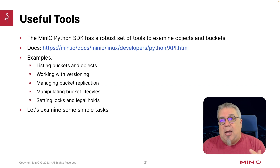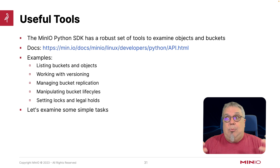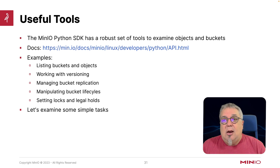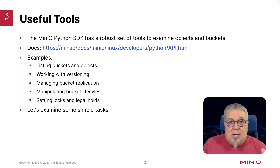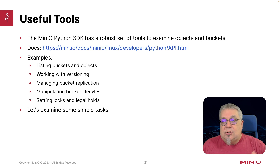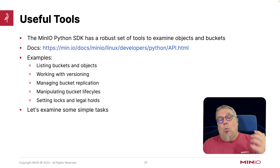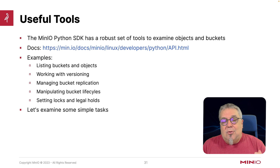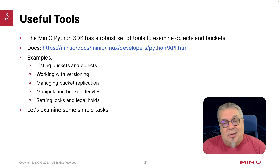Now that we've got our client set up, what can we do with it? We've got a very robust set of tooling to examine objects in buckets — the entire API is listed right there. You can list buckets, list objects across the entire server, work with versioning, turn versioning on or off, see different versions of objects, work with bucket replication, see the bucket lifecycle, turn on or off lifecycle management, and set and remove locks and legal holds. All the things you've seen in other videos in this series, you can do largely through the MinIO Python SDK.